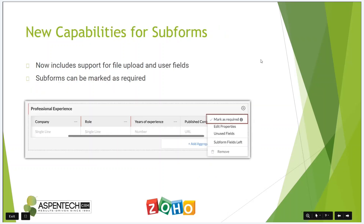We also have new capabilities for subforms. We can now include both file upload and user fields within subforms — we've had those for traditional modules for a while, but now they're available in subforms as well. We can also mark a subform as required, meaning you have to enter at least one row into that subform before you can save the overall record.